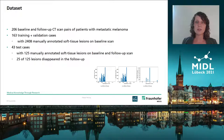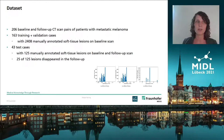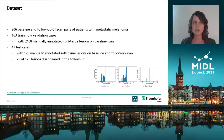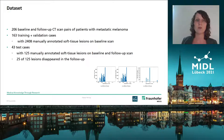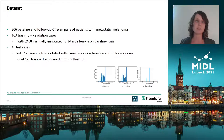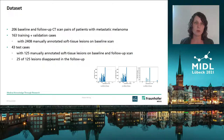In our study, we used the dataset of the University Hospital of Tübingen, which consists of 206 baseline and follow-up CT scan pairs of patients with metastatic melanoma. We split our data to 163 training and validation cases with 2,408 manually annotated soft tissue lesions on the baseline scan. On the 43 test cases, we have 125 manually annotated soft tissue lesions on both the baseline and the follow-up scan. For 25 of those lesions, the lesion disappeared in the follow-up image due to the therapy, so the therapy was successful.